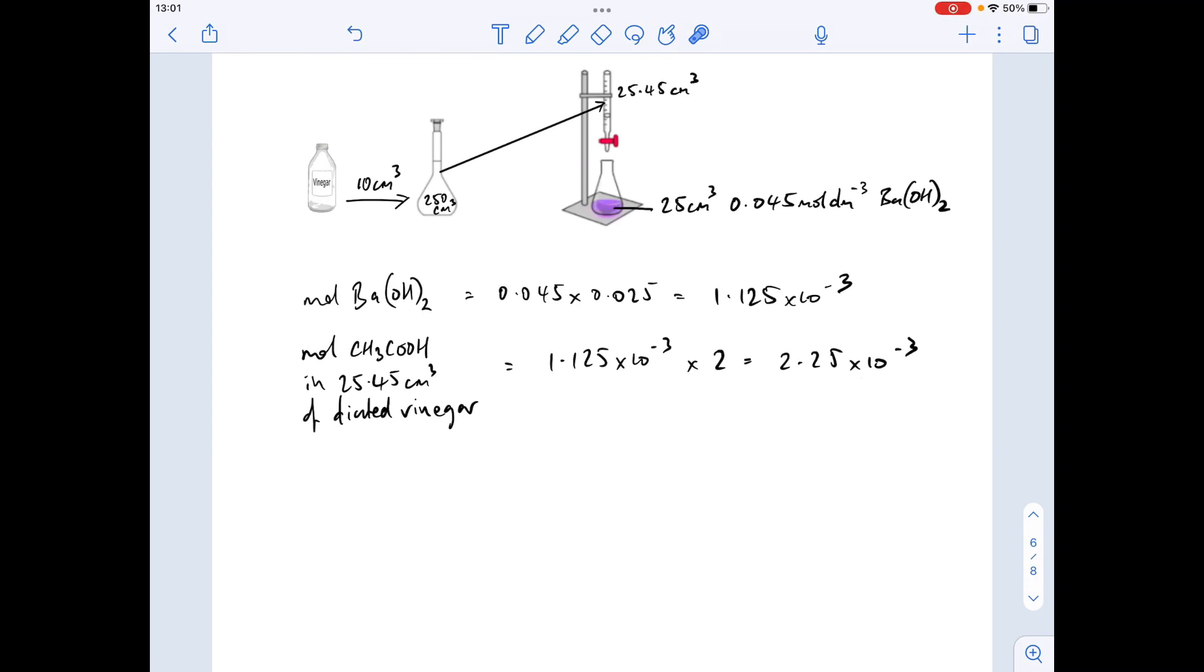So now what we can do is work out how many moles of ethanoic acid were in the 250 cm³, and therefore in that 10 cm³ that's come from the bottle.